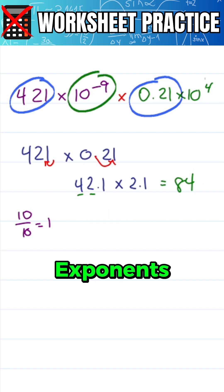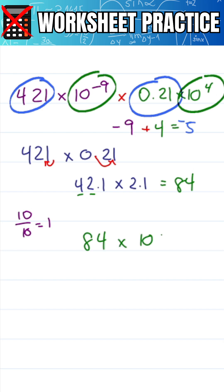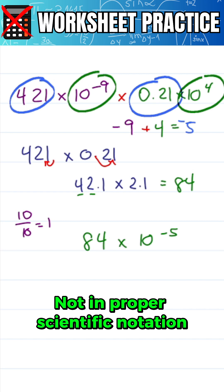Next we'll look at the exponents which we simply add. That's minus 9 plus 4 giving me minus 5 for a near final answer of 84 times 10 to the minus 5 but it's not in proper scientific notation.